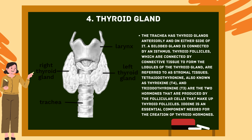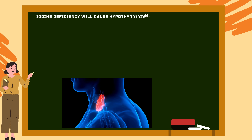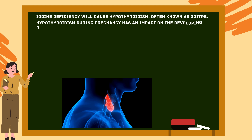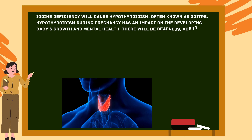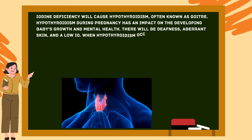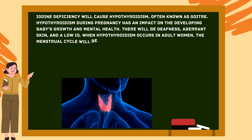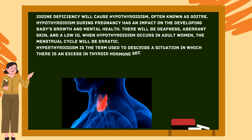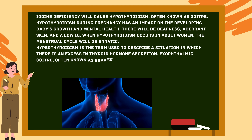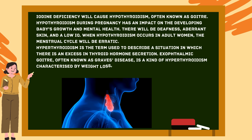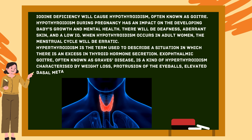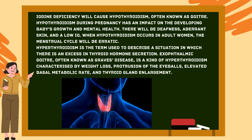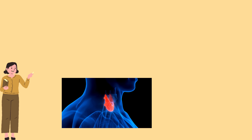Iodine deficiency causes hypothyroidism, often known as goiter. Hypothyroidism during pregnancy impacts the developing baby's growth and mental health, resulting in deafness, abnormal skin, and low IQ. In adult women, hypothyroidism causes erratic menstrual cycles. Hyperthyroidism refers to excess thyroid hormone secretion. Exophthalmic goiter, also known as Graves' disease, is a kind of hyperthyroidism characterized by weight loss, protrusion of the eyeballs, elevated basal metabolic rate, and thyroid gland enlargement.